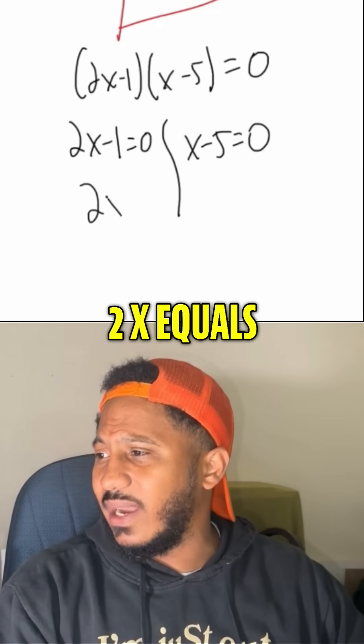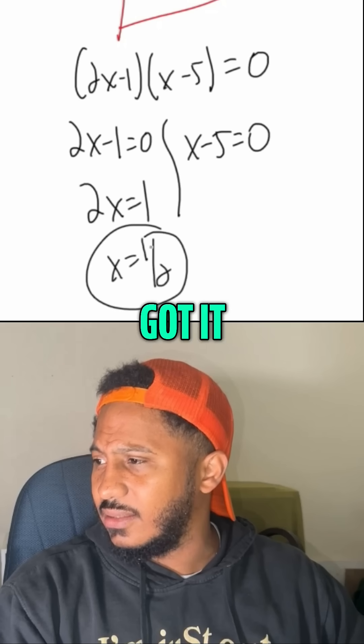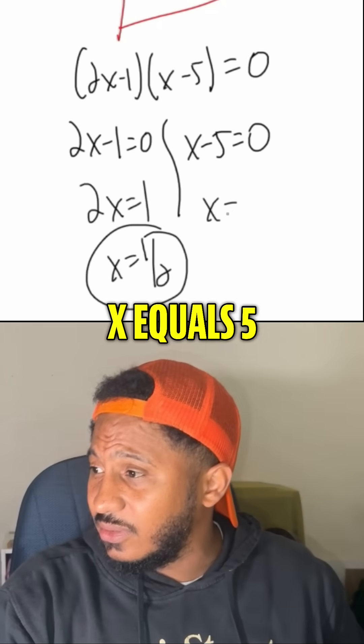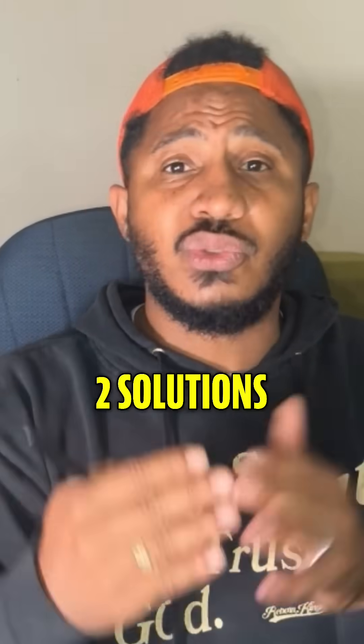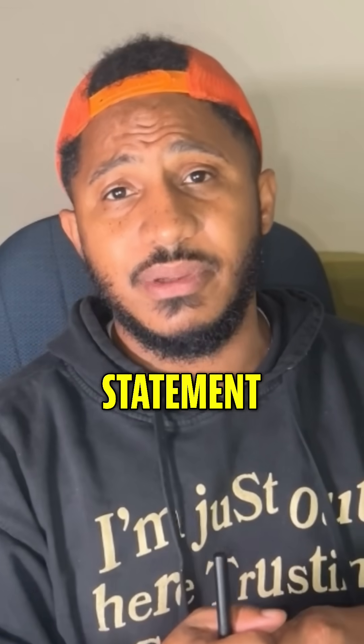So like here, adding one to both sides, 2x equals 1. So x equals 1 over 2. Got it. And here, adding 5, x equals 5. And now we have two solutions to this equation, okay? And then we can always check it by plugging it back in and see if we get a true statement. Always remember math is everywhere.